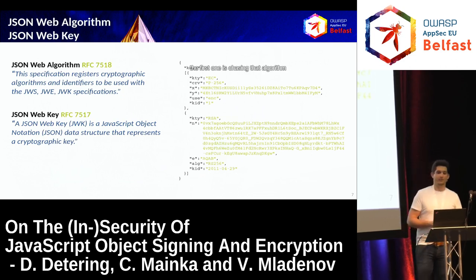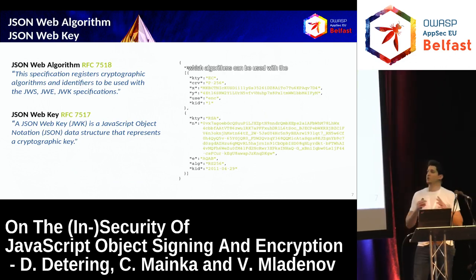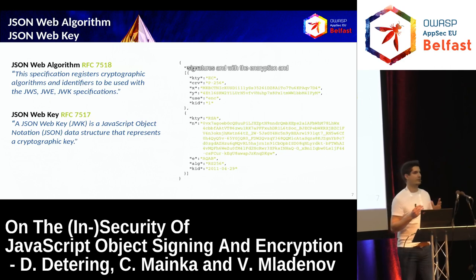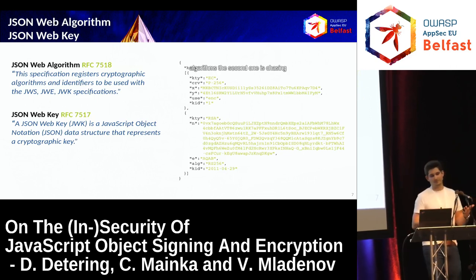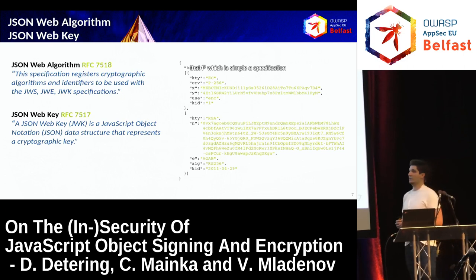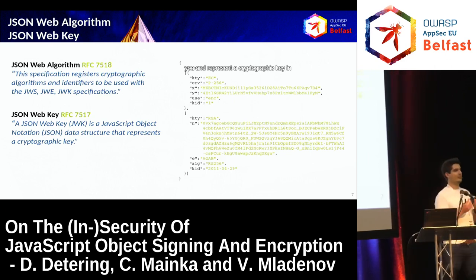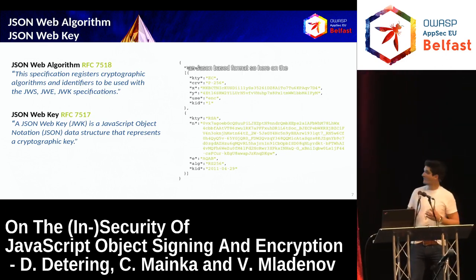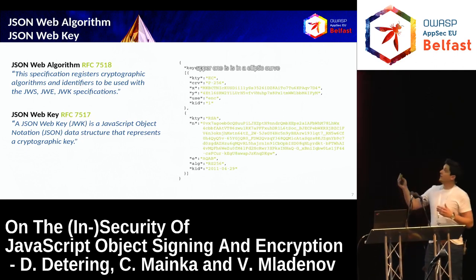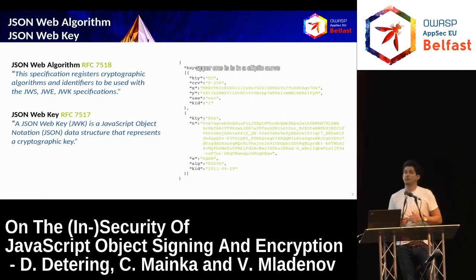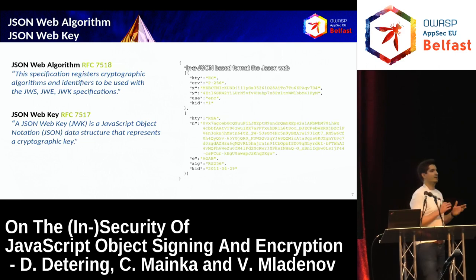What are those standards? The first is JSON Web Algorithm, which describes and specifies which algorithms can be used with signatures and encryption, and which additional parameters are necessary. The second is JSON Web Key, which is a specification of how to represent a cryptographic key in a JSON-based format. There's an example of a JSON Web Key Set containing multiple keys - the upper one is an elliptic curve public key and the bottom one is an RSA public key.